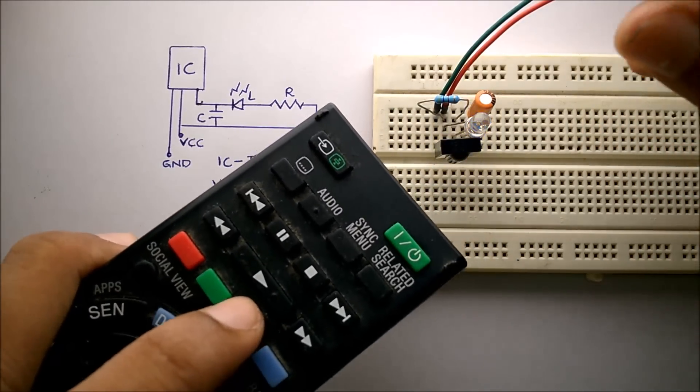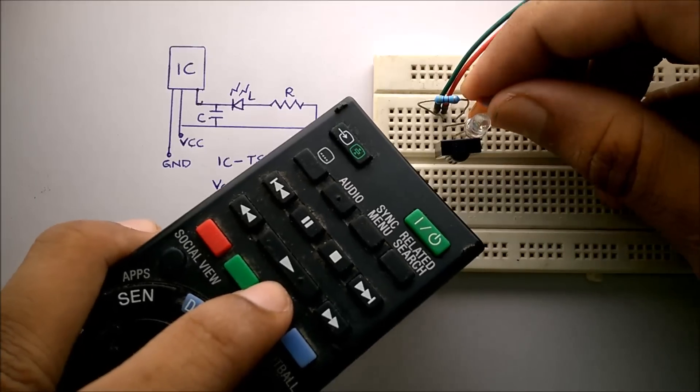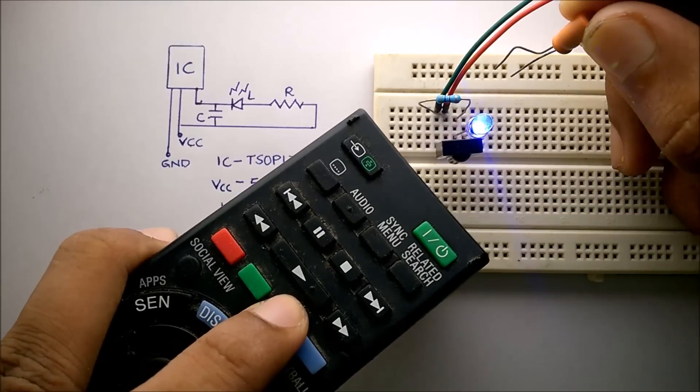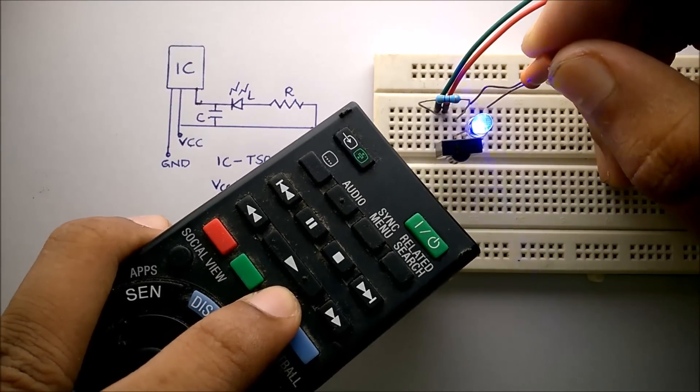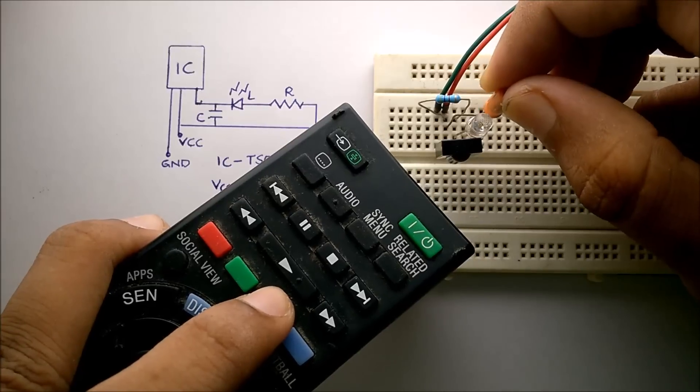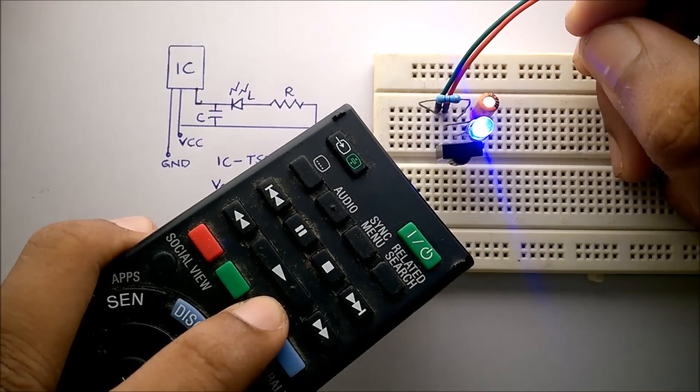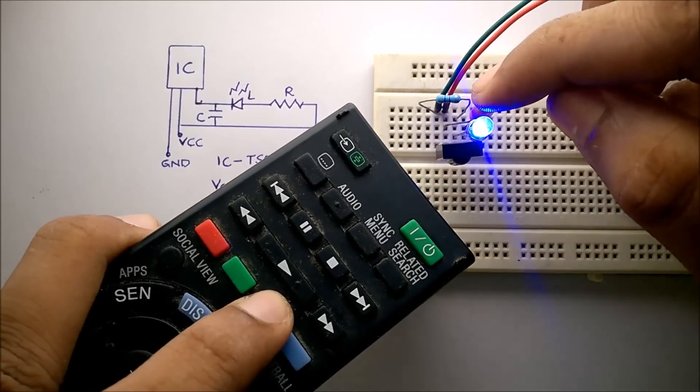Now I will show you the purpose of this capacitor. When I remove this capacitor, you can see the flickering rate of the LED has increased, and when I place it again, the flickering has reduced. So this is smoothing out the output.